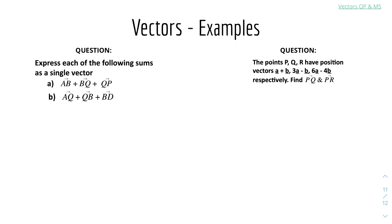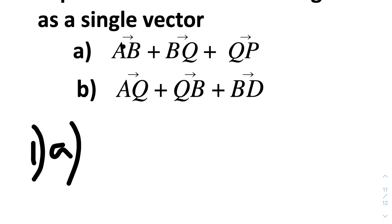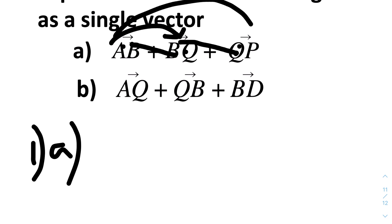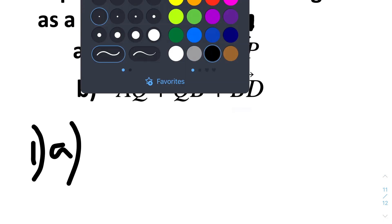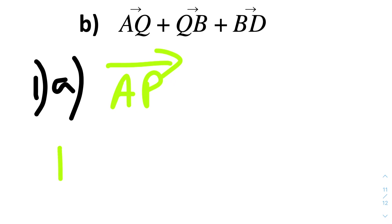Then we have some examples for vectors. Express each of the following sums as a single vector. We can use the triangle law of addition. So when we have AB plus BQ, it becomes AQ, because B cancels out. For the next one, Q cancels out too, so you can basically go from A to P — everything cancels out, therefore it will be AP. And for part B, we can cancel those out similarly, and it will jump from A to D, therefore it's equal to AD.